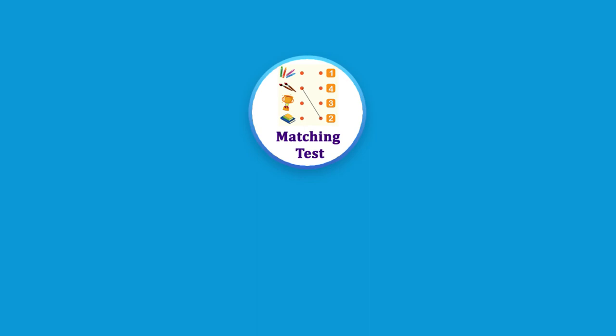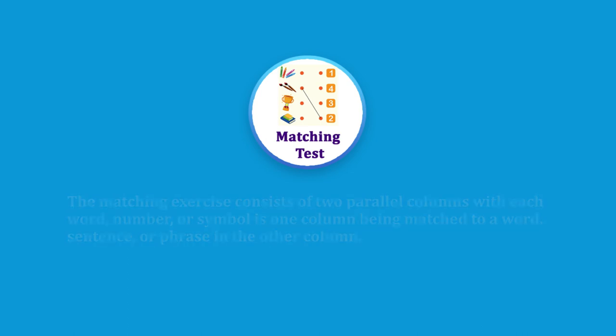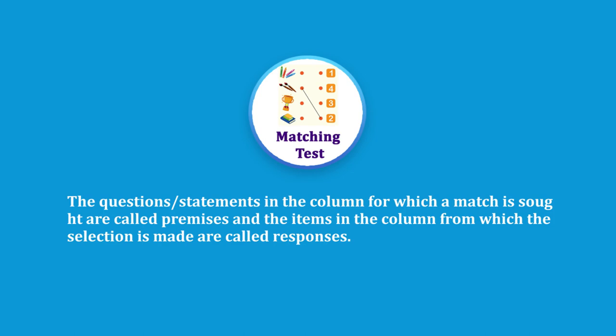Coming to matching tests. A matching exercise consists of two parallel columns, where each word, number, or symbol in one column is matched to a word, sentence, or phrase in the other column. One side has the premises and the other side has the responses in jumbled form. The student matches appropriate answers from column A to column B. The question or statement in the column for which a match is sought is called the premises; the items from which the selection is made are called the responses.